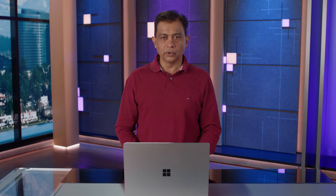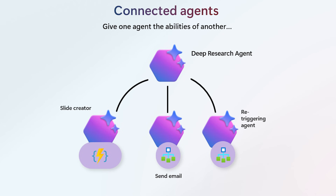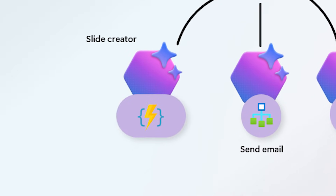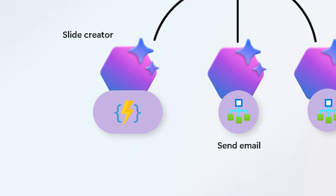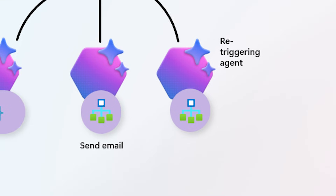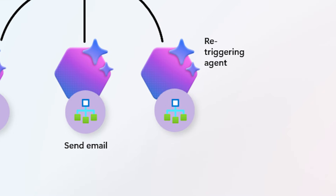Now let's zoom out. While today's demo focuses on a single agent workflow, this gets even more powerful when you connect agents together. With connected agents in Foundry Agent Service, agents can invoke other agents as tools, enabling complex, multi-step workflows. Imagine this: the research agent feeds into a second agent that formats results into a slide deck via Azure Functions. A third agent sends the output to your CRM or client inbox using Logic Apps. And a fourth agent monitors updates on a topic and re-triggers the process when new information surfaces. This is not just automation — that's orchestration at scale, and it's one of the core capabilities of the Foundry platform.